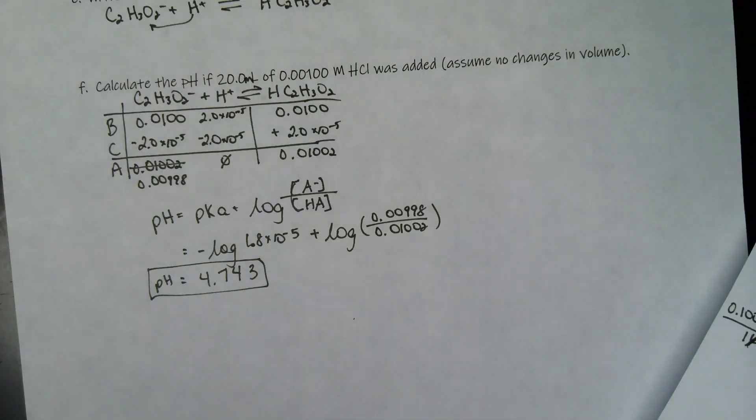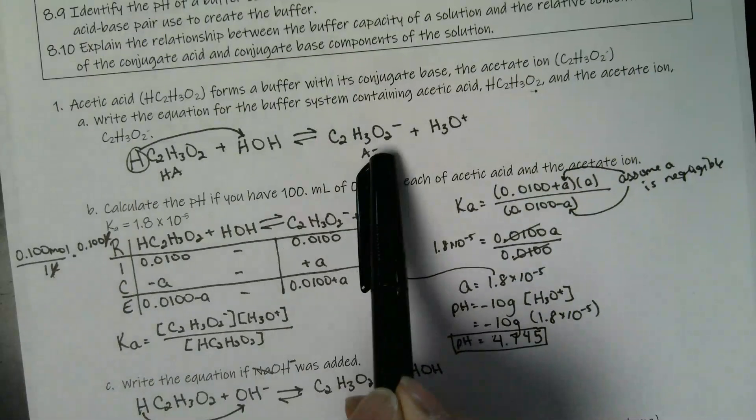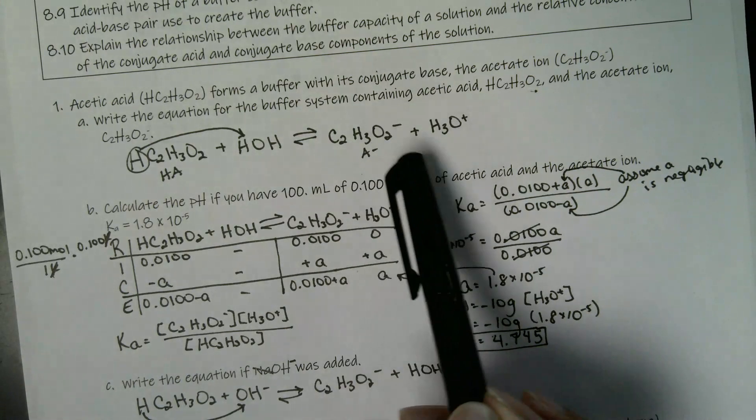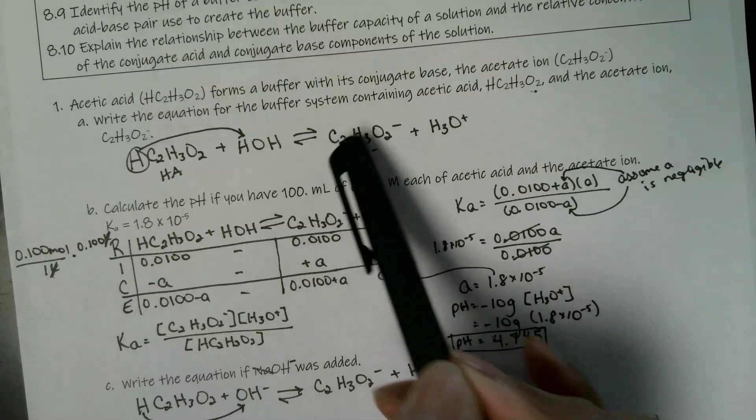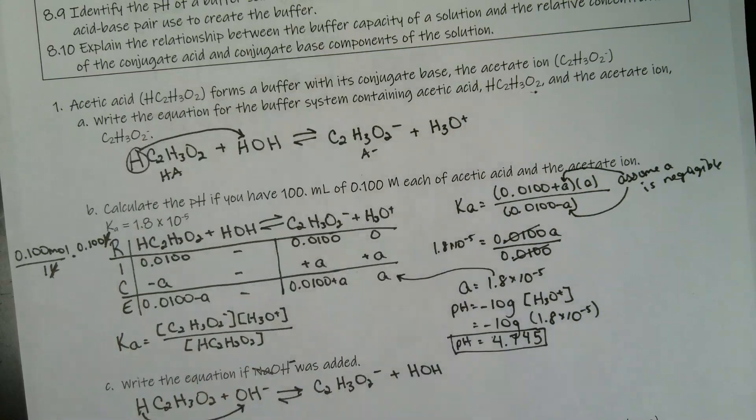So with these, make sure you know that if you're adding an acid to something or a base, you know which species it's going to react with. So the acid is going to react with the conjugate base. If you add a base, like a strong base to this solution, it's going to react with your weak acid. And then just play around with some BCA tables and throw it into the Henderson-Hasselbalch equation. Hope this was helpful. Take care. Bye.